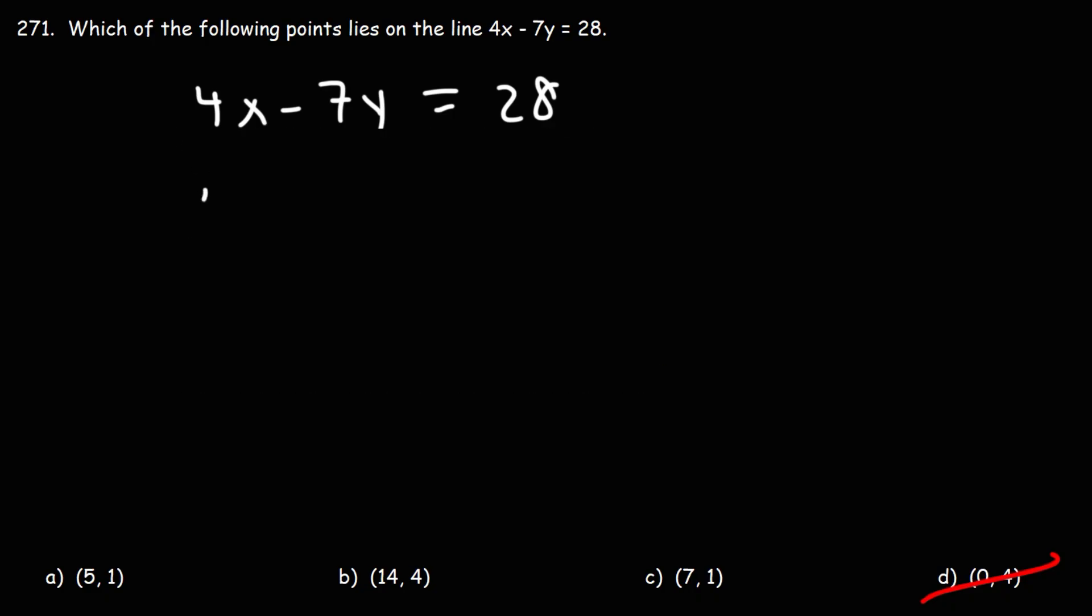Let's try A. Let's replace x with 5, y with 1. 4 times 5 is 20, 7 times 1 is 7, 20 minus 7 is 13. 13 does not equal 28, so A is not the right answer.